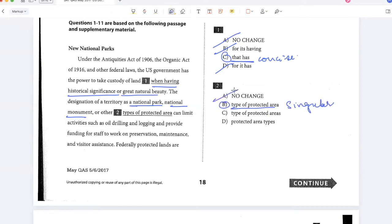Types is plural, so it's not A. Areas is plural, so it's not C. And this is also plural. So the best answer is B.